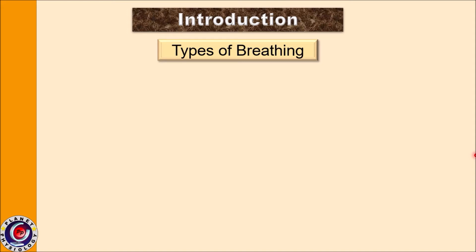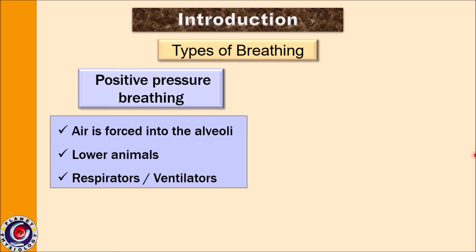How do we exactly take in air? Based on that, the ventilation process can be divided into two: positive pressure breathing and negative pressure breathing. Whenever air is forced into the alveoli, it is called positive pressure breathing, and this is usually seen in some lower animals.